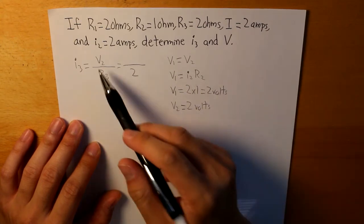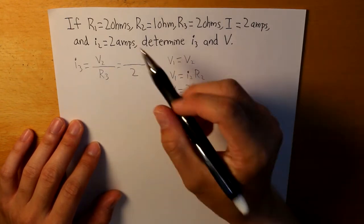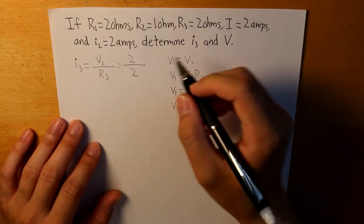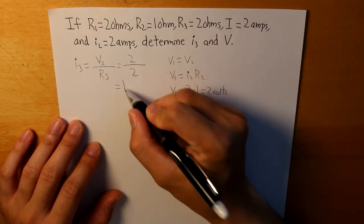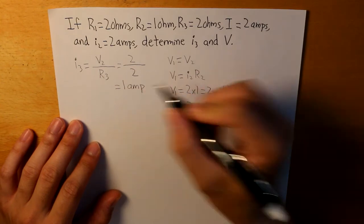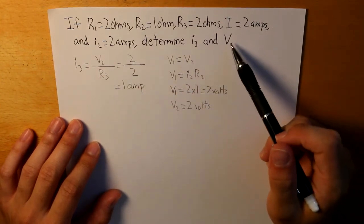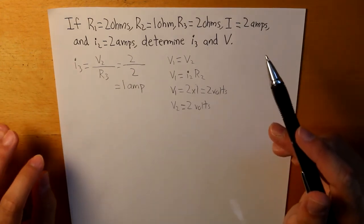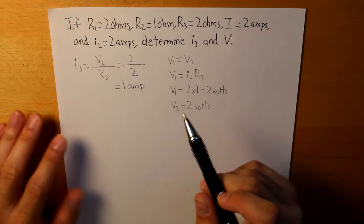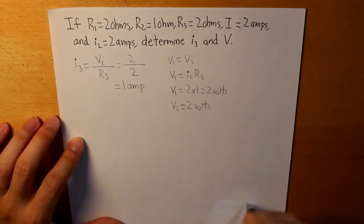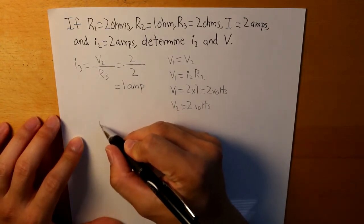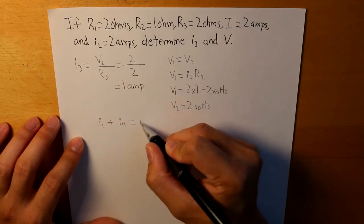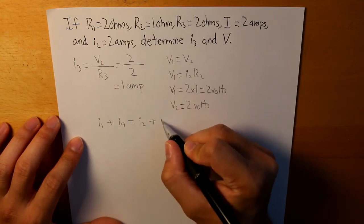And now we can plug it in here to determine what I3 is. And I3, given that V2 is 2, I3 is going to be equal to 1 amp. Now we're going to have to solve for what V is. And it's a little bit more complicated, but let's write down what the KCL equation is again. So the KCL equation is essentially I1 plus I4 equal to I2 plus I3.